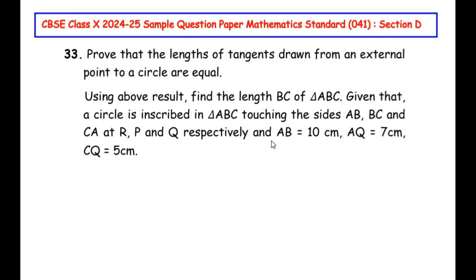This question is from the circles chapter. Prove that the lengths of tangents drawn from an external point to a circle are equal. Using the above result, find the length of BC of triangle ABC. Given that a circle is inscribed in triangle ABC, touching the sides AB, BC and CA at points R, P and Q respectively. The side length AB is given as 10 cm, AQ is 7 cm and CQ is 5 cm. Let us divide this entire question into two parts, that is part 1 and part 2, and let us begin with part 1.